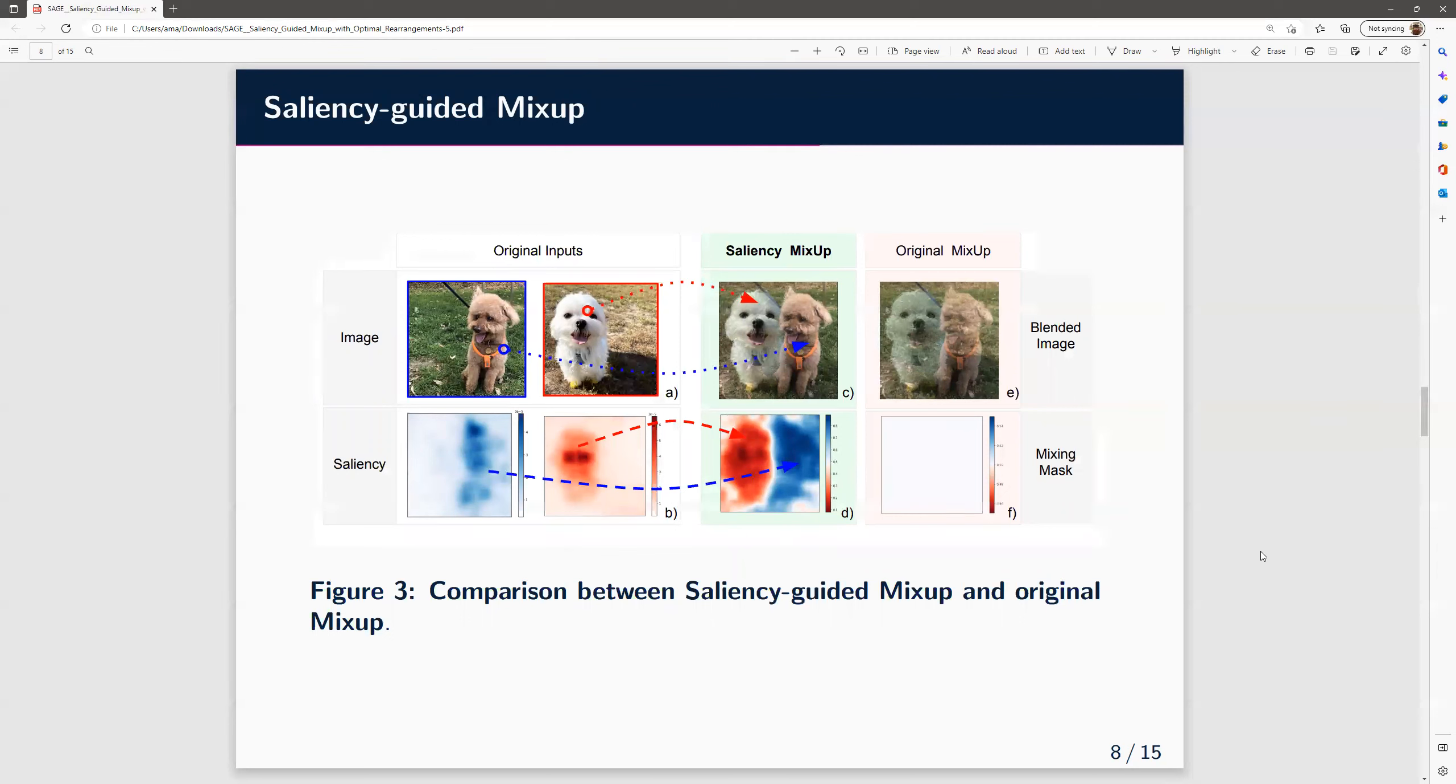Here, given original images and their saliency maps, our saliency mix-up computes the mixing mask M based on the relative saliency of the inputs. The values in M are represented with a heat map. The blue area indicates stronger contribution of the Poodle image. And the red area corresponds to the Maltese image being more prominent. And the pale regions in the mask indicate equal contribution from both images.